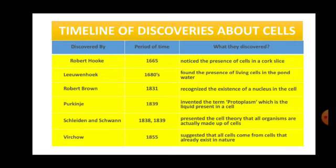Let's move on to the timeline of discovery about cells. Robert Hooke in 1665 noticed the presence of cells in a cork slice. He was then followed by Anton von Leeuwenhoek — in 1676 to be precise — who found the presence of living cells in pond water. Leeuwenhoek is also known as the father of microbiology. Then in 1831, Robert Brown recognized the existence of a tiny dot-like structure in the center of the cell, sometimes in the periphery also — the nucleus.